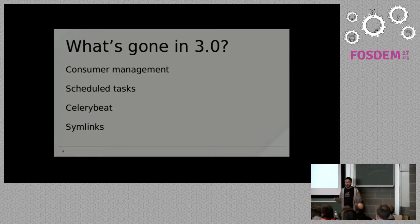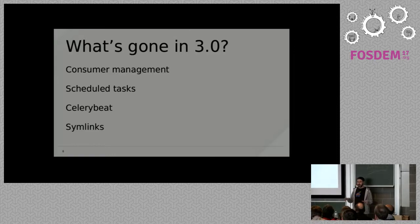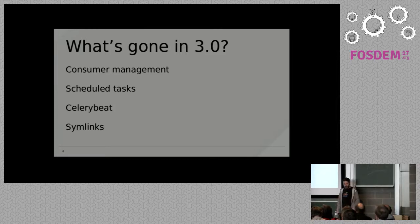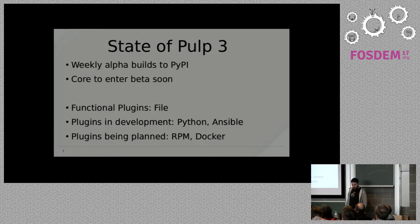We also got rid of Celery Beat, so there is now one less daemon you have to run. The responsibilities of Celery Beat have been distributed to other workers, so all the workers are looking out for each other. We also got rid of symlinks, so when you publish you don't have to wait on slow spinning disks — all publishing now happens at the database layer.